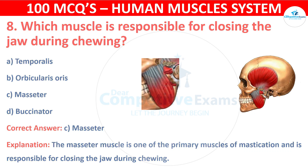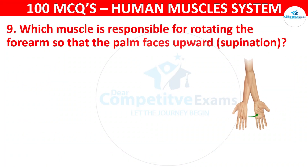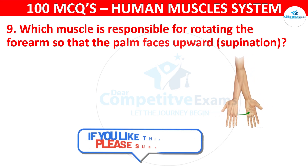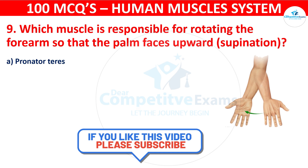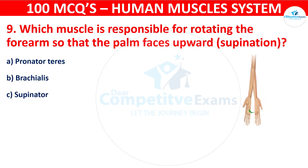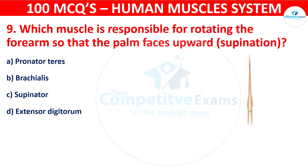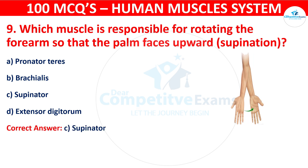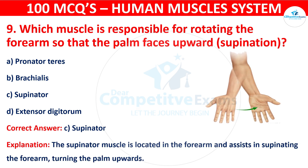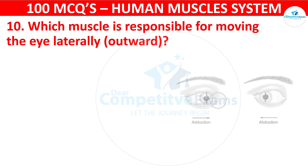Question number nine: Which muscle is responsible for rotating the forearm so that the palm faces upward — supination? Your options are: Pronator teres, Brachialis, Supinator, or Extensor digitorum. The correct answer is C, that is supinator. The supinator muscle is located in the forearm and assists in supinating the forearm, turning the palm upwards.